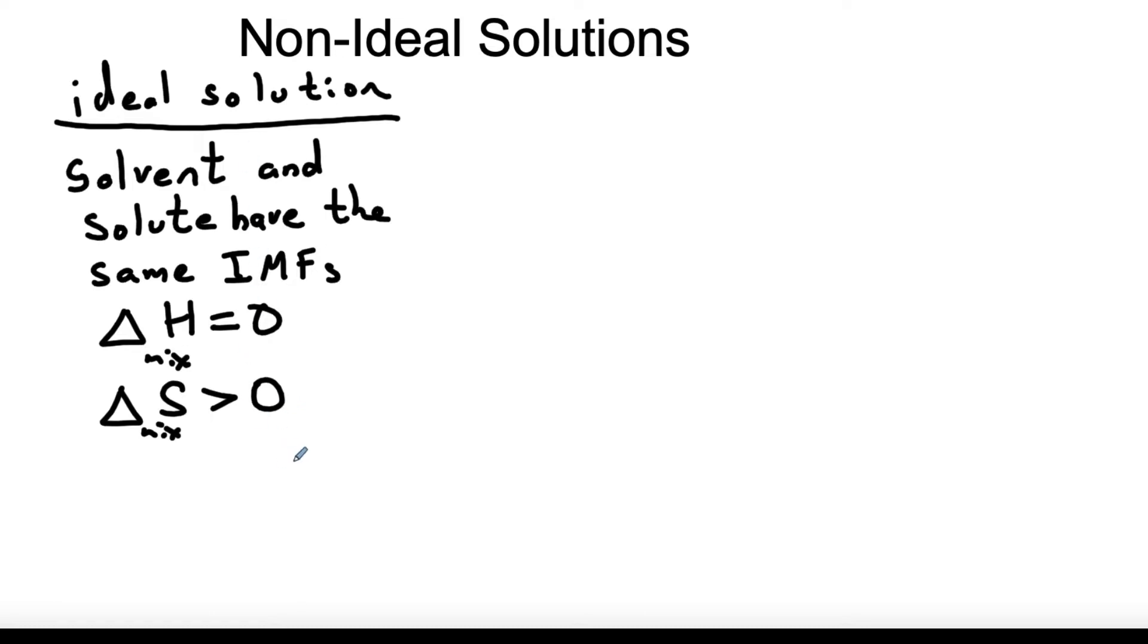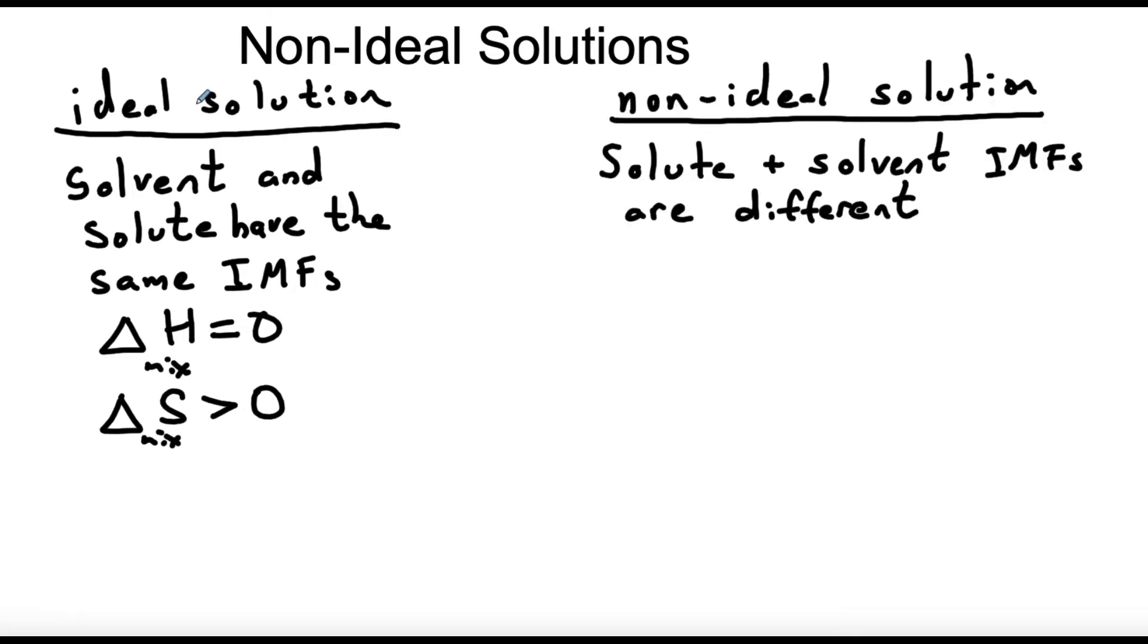Okay so that's for an ideal solution. Now let's contrast that with a non-ideal solution. In a non-ideal solution the IMFs that the solute and the solvent have are different, and critically what matters here really is the average of the self-interactions.